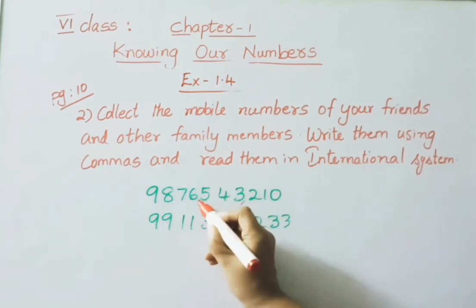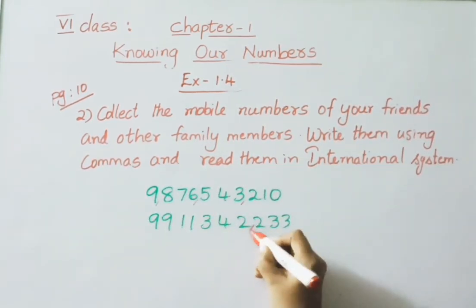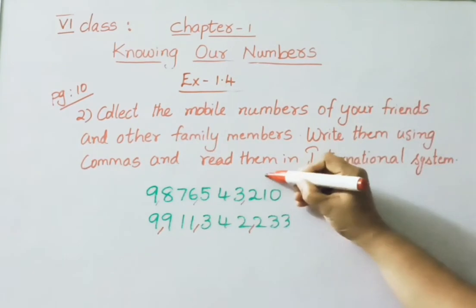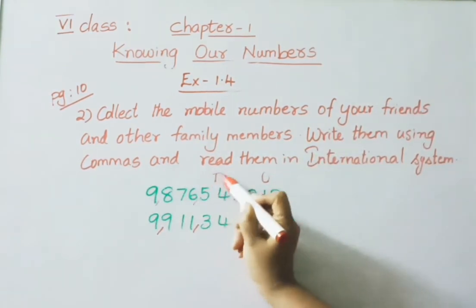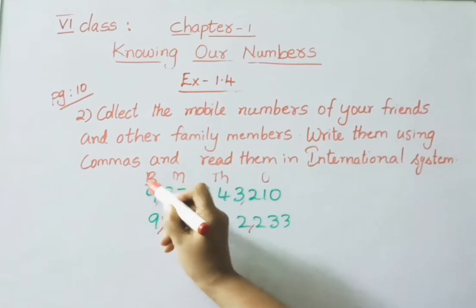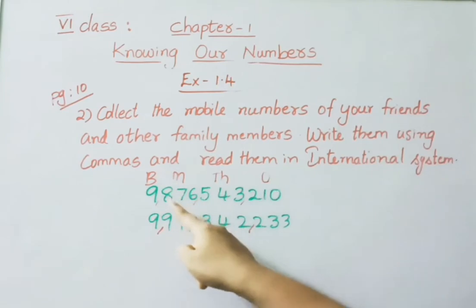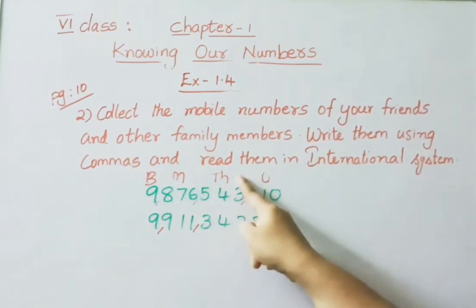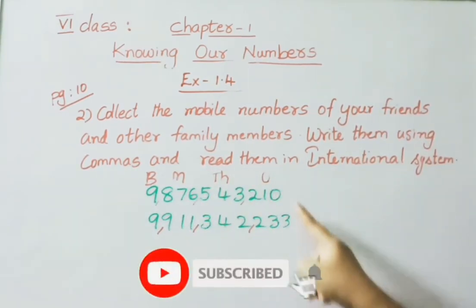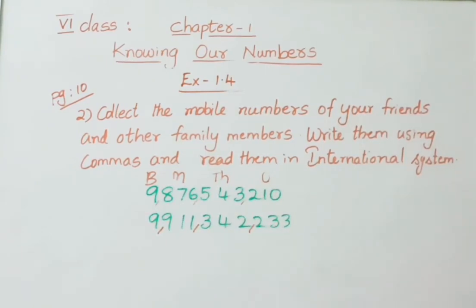Separating three digits at a time, then reading: the first three digits come under the ones period, the next three under thousands, then millions, then billions. Reading the example numbers: nine billion eight hundred seventy six million five hundred forty three thousand two hundred ten; next: nine hundred eleven million three hundred forty two thousand two hundred thirty three. If you practice writing and reading many numbers this way, you will get comfortable with the International system.